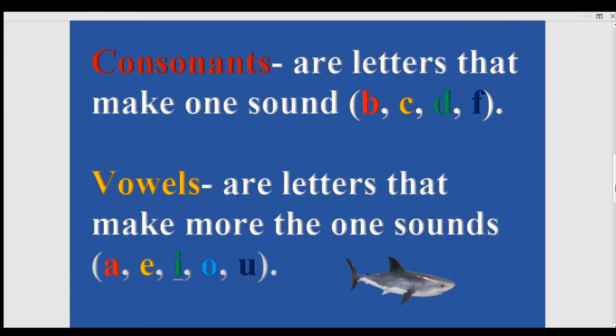Consonants are letters that make one sound. For example, the B makes the B sound, the C makes the C sound, the D makes the D sound, and the F makes the F sound.